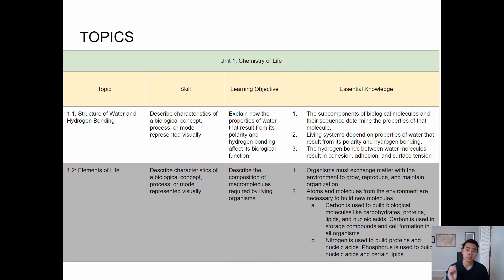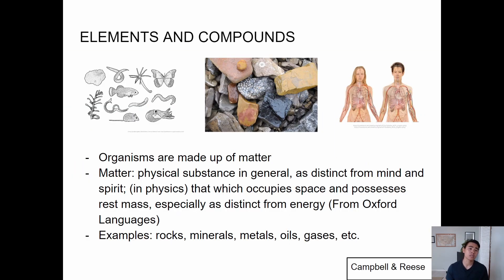The learning objective is to explain how properties of water result from its polarity and hydrogen bonding, and how that affects its function. I would write down the three essential knowledge points and, as we talk about the lesson today, figure out how the content fits into the essential knowledge. We'll begin with elements and compounds — something pretty basic, but it ties back to chemistry and helps you see how chemistry relates to biology.